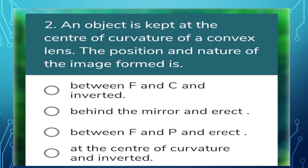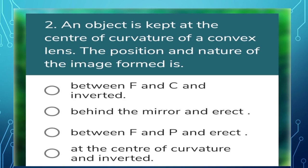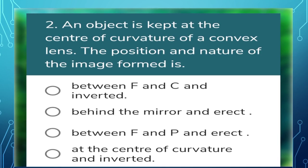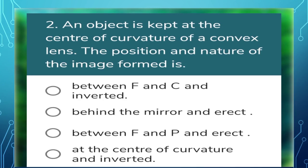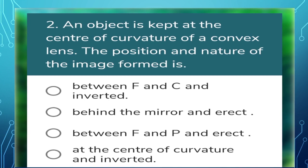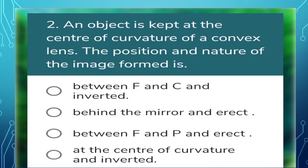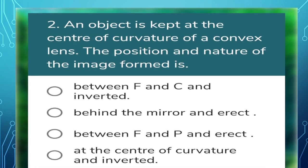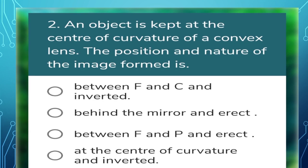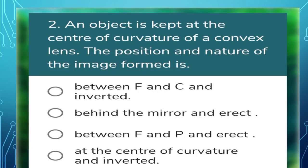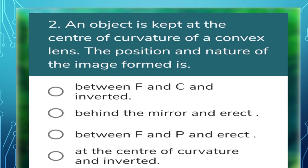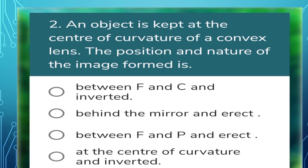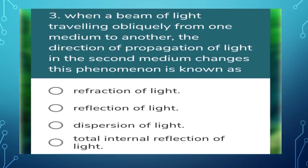Next question: an object is kept at the center of curvature of a convex lens — what is the position and nature of the image formed? When you place the object at the center of curvature of a convex lens, the image forms at 2F behind the lens, which is also the center of curvature. The image is real and inverted. So option D is correct.